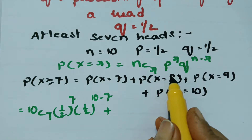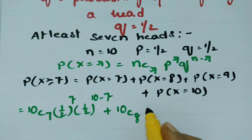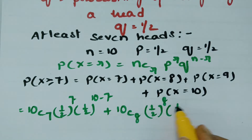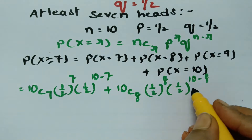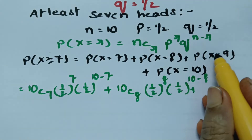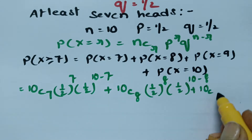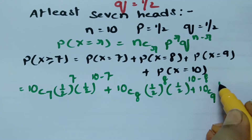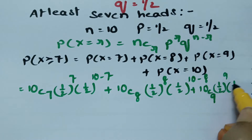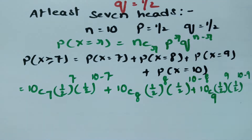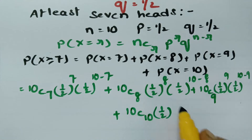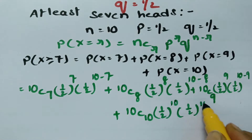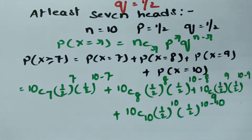For R equal to 8, this is 10C8, P to the power of 8, and Q to the power of N minus R. For R equal to 9, this is 10C9, half to the power of 9, and Q power N minus R. For R equal to 10, this is 10C10, P power R, and Q power N minus R, which is 10 minus 10.